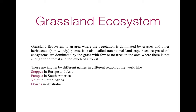Grasslands are known by different names in different regions of the world. In Europe and Asia, they are known as steppes. In South America, they are known as pampas. In South Africa, they are known as veldt. And in Australia, the grassland ecosystem is known as downs.